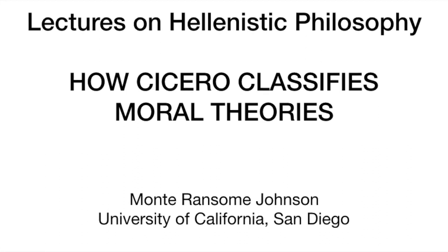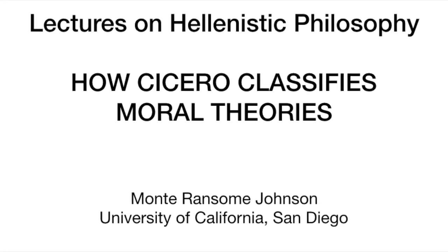The combined theories combine these non-moral elements with morality, and they're attributed to three very obscure figures that we don't have any writings from — at best, we have some testimony or fragments. The first one is Callipho. What does Cicero say his account of the highest good is? Callipho says that the highest good is being a moral person — morality — plus having pleasure.